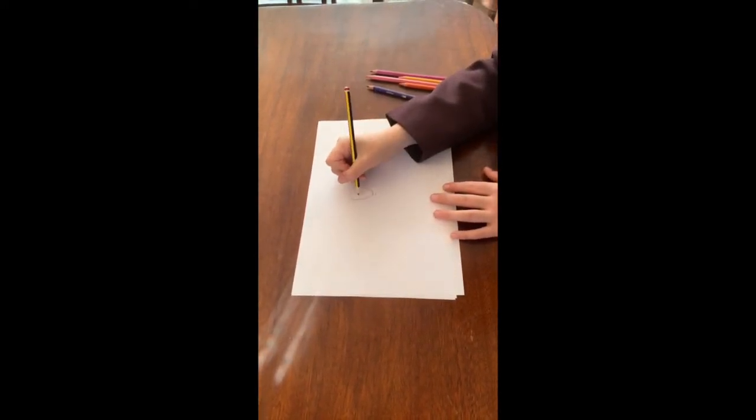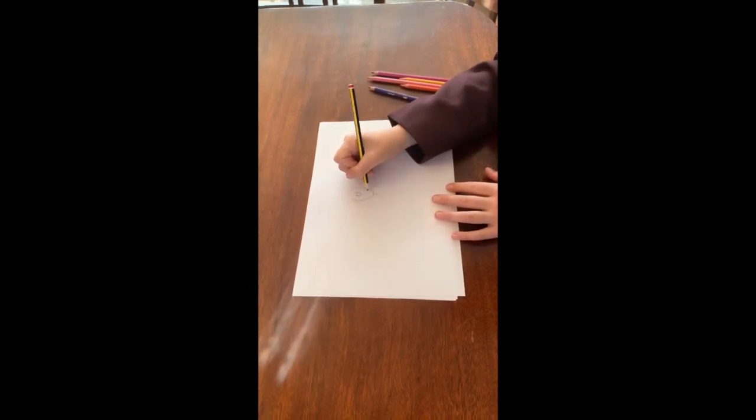Then once you've done that, it depends what type of pupil you want, but normally you can just do one here, so this one here, there, there, and there.